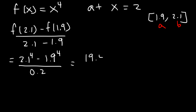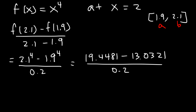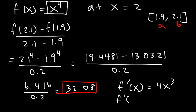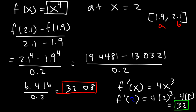2.1 to the 4th power is 19.4481, and 1.9 to the 4th power is 13.0321. Subtracting those gives 6.416, and dividing by 0.2 gives 32.08. So the instantaneous rate of change is approximately 32. To find the exact value, we take the first derivative: the derivative of x to the 4th is 4x cubed. Plugging in 2: 4 times 2 to the 3rd, which is 4 times 8, equals 32. So the instantaneous rate of change is exactly 32, and our approximation was very close.